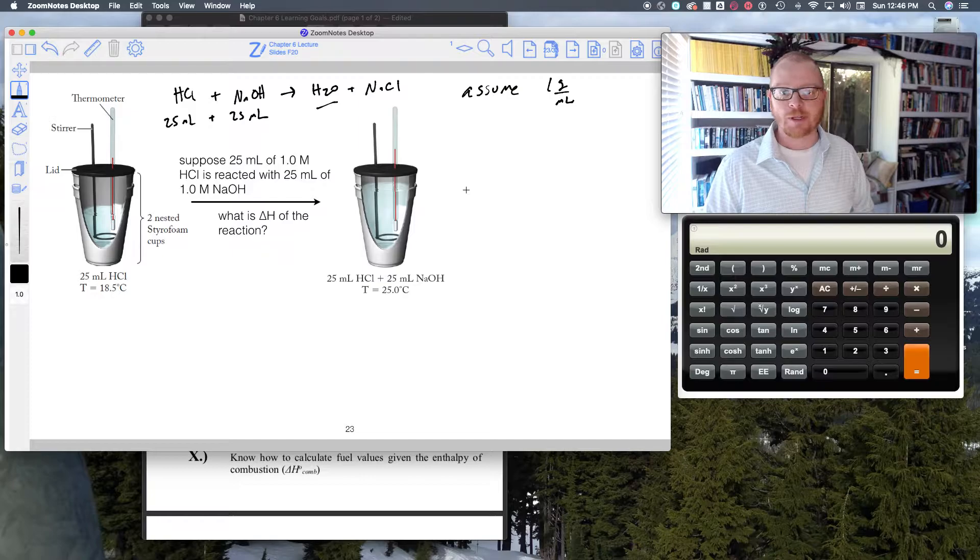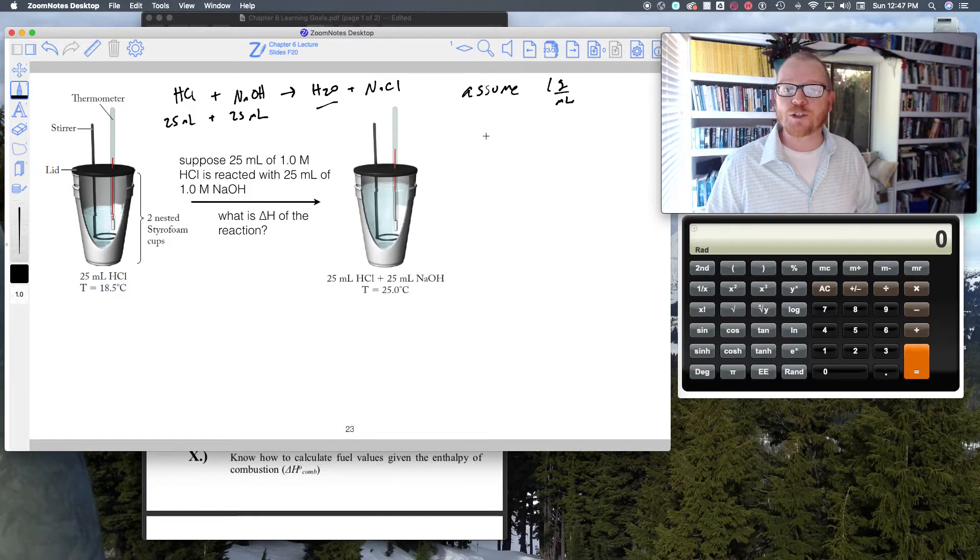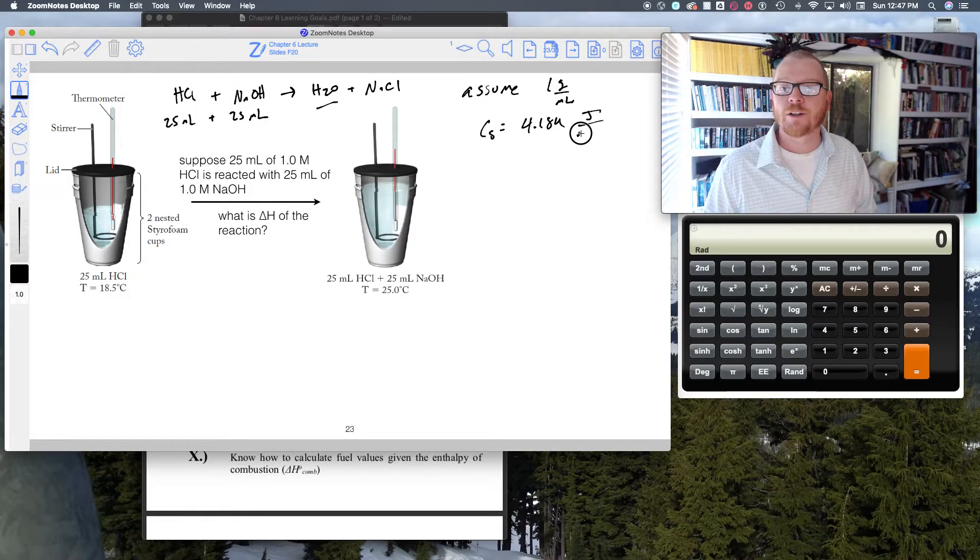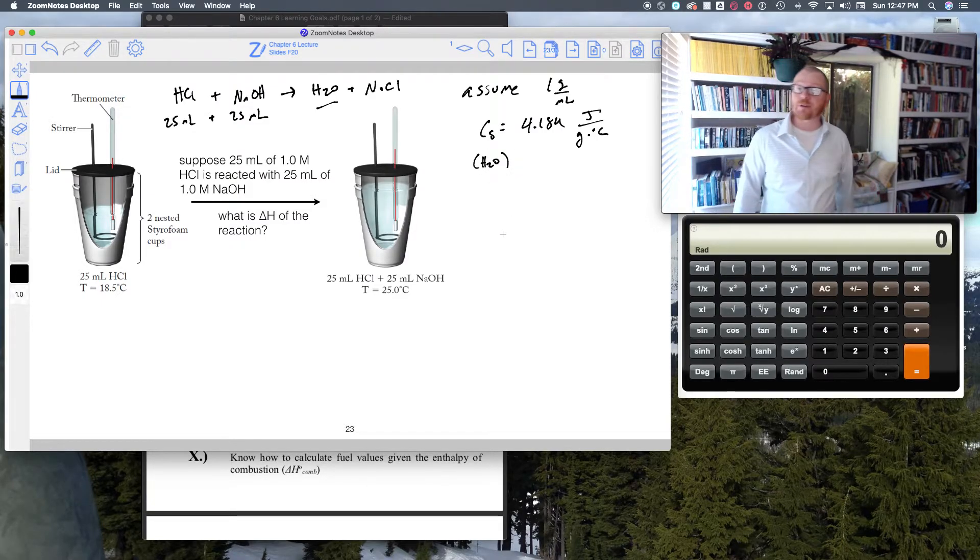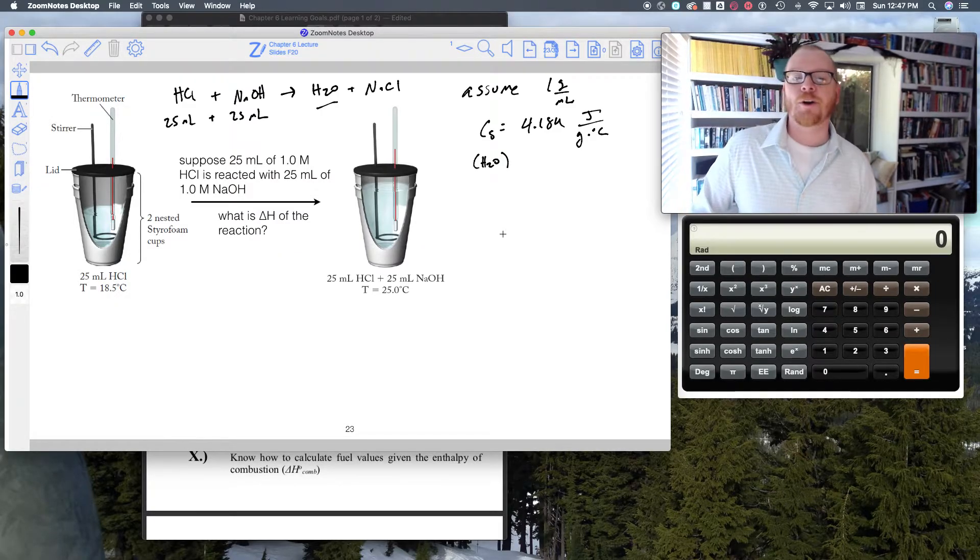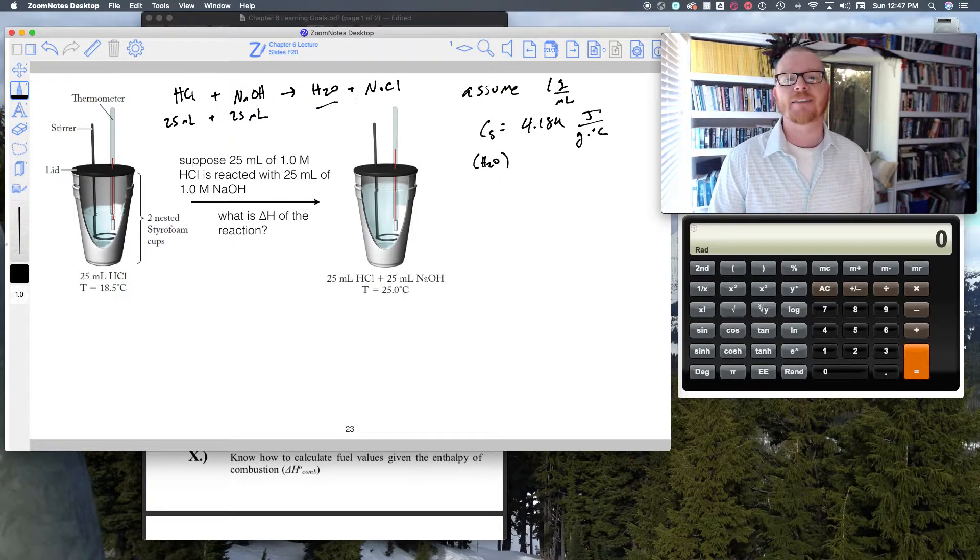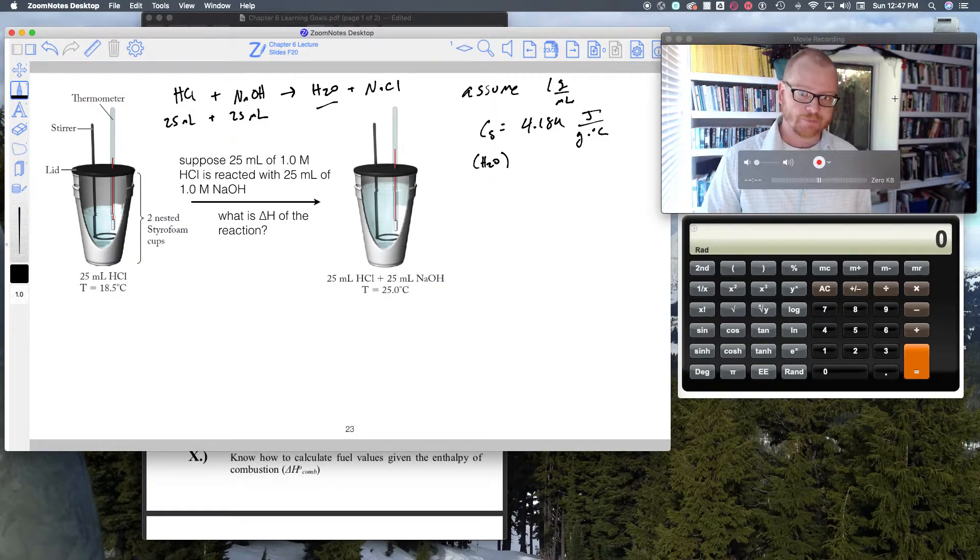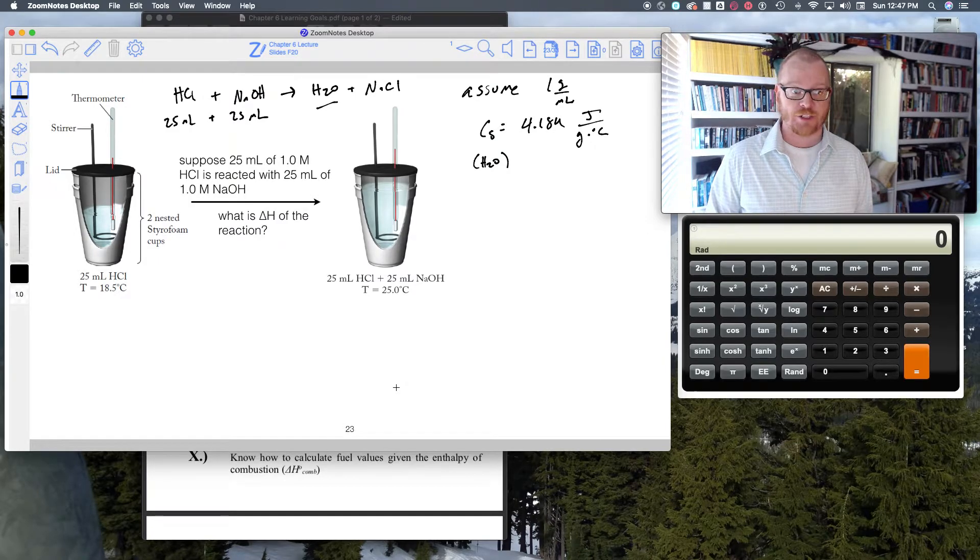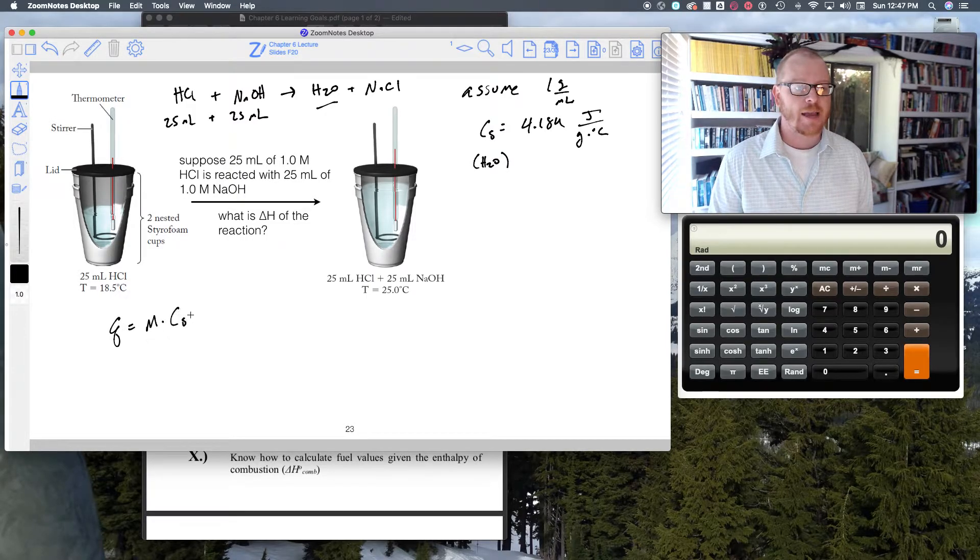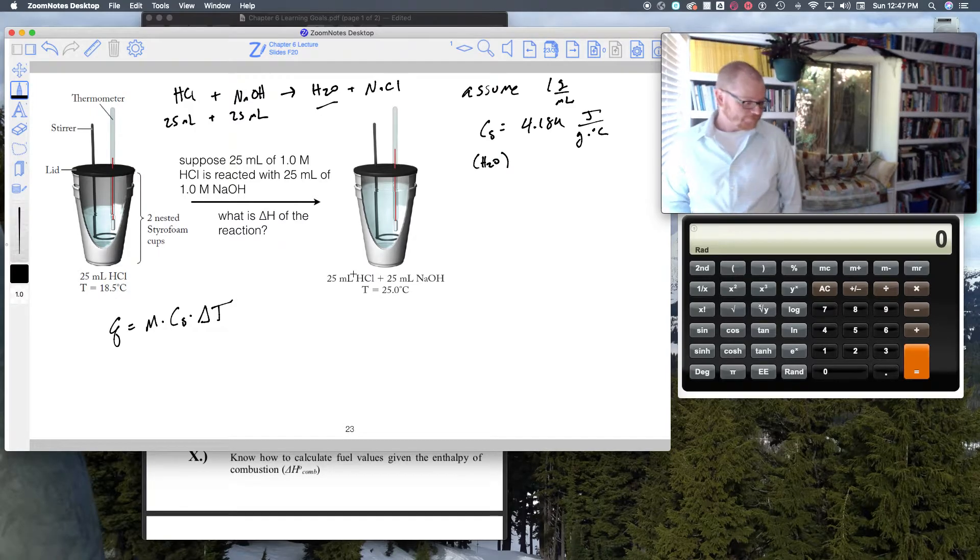I'm going to assume the density of this whole mixture is one gram per milliliter. Given that this is aqueous and water is a product, I'm just going to assume the density is one gram per mil. I'm also going to assume the heat capacity of the mixture is 4.184 joule per gram per degree C, which is the specific heat of water. Both of these are good assumptions because these solutions are aqueous.